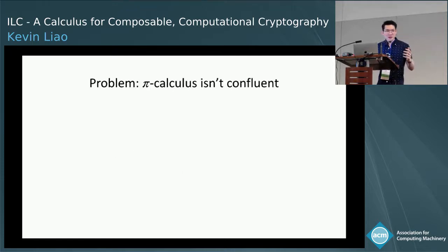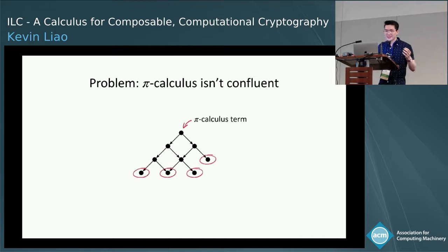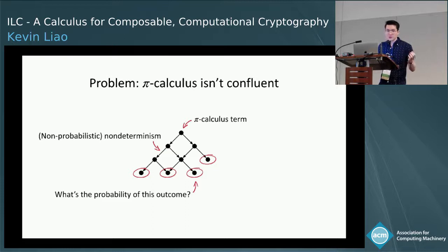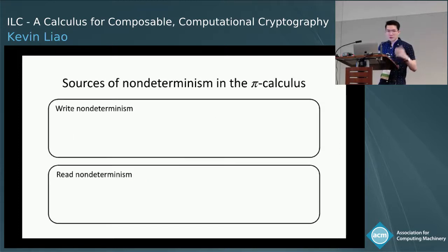The problem is that the pi-calculus isn't confluent. If I have a pi-calculus term, I can evaluate it in a number of ways and get different results. Because the choice of how to evaluate the program is non-deterministic, it becomes really difficult to reason about the probability of a certain outcome happening, and this in turn frustrates security proofs.